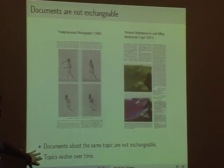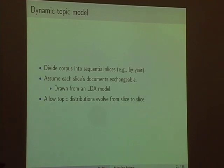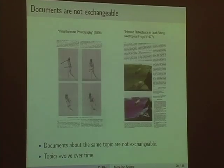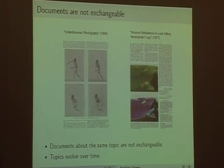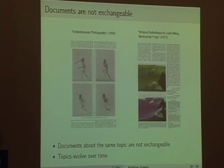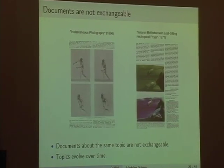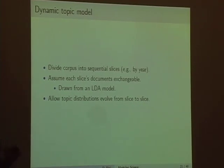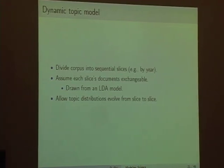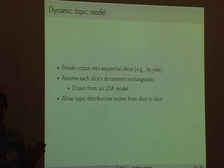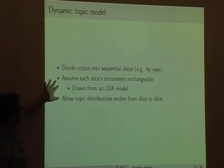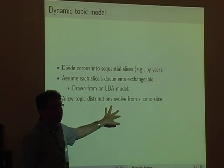We wanted to develop a topic model where the topics evolved over time. Mark's question: is the idea that the vocabulary of a particular topic changes over time? Exactly. If I want to talk about photography in 1890, I'm going to use a whole different set of words than someone in 1977 talking about photography. The idea is to divide the corpus into sequential slices by year — 1890, 1891, 1892, and so on — assuming each slice's documents are exchangeable within that year, while allowing topic distributions over words to evolve from slice to slice.